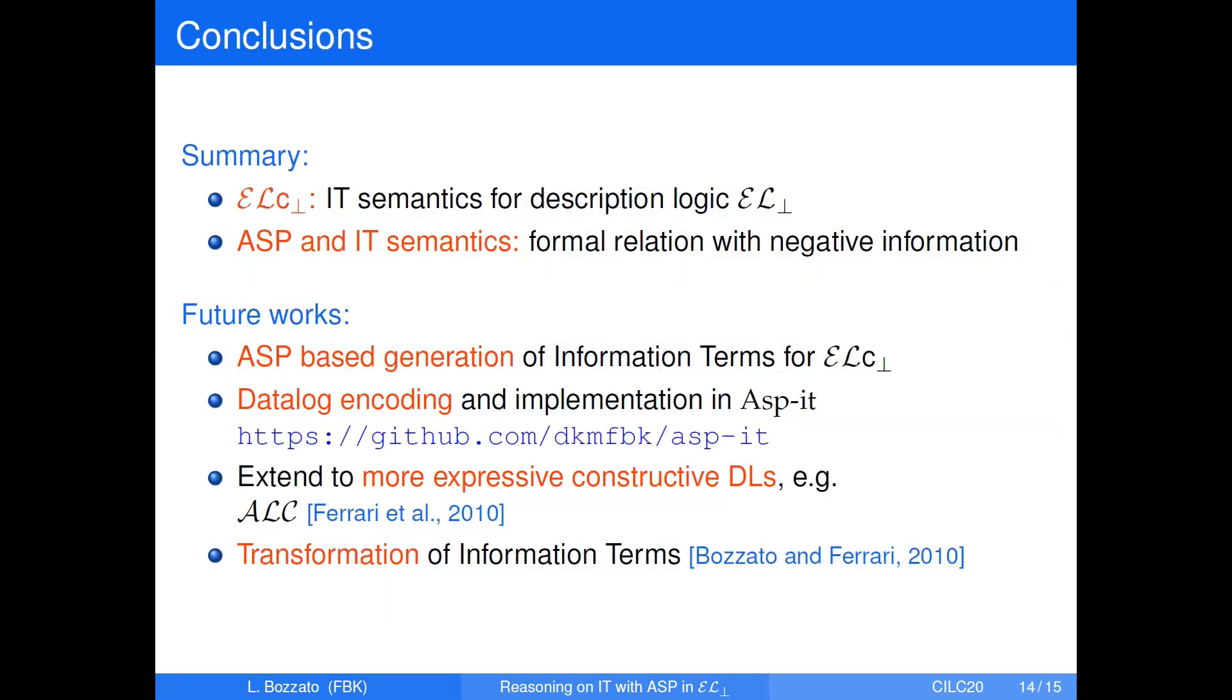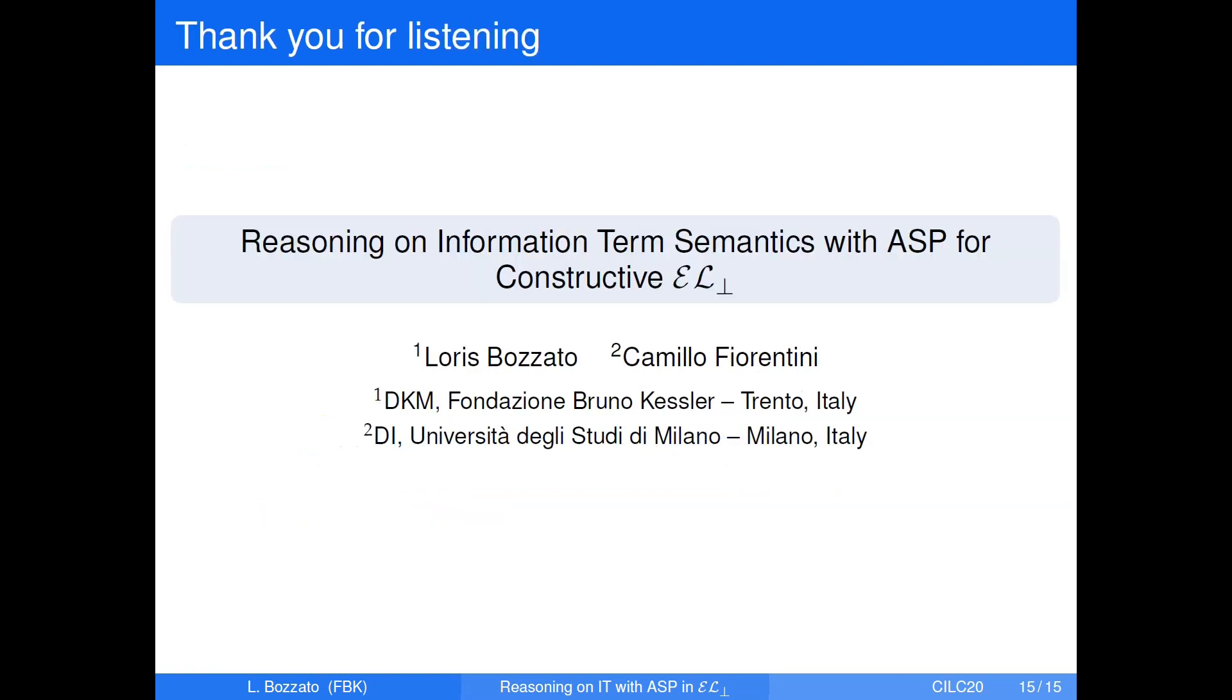We then define an answer set for a piece of information if its positive answers meet the negative constraints. By defining a notion of minimal piece of information, we obtain the other direction of our main result. Given a minimal piece of information, then each set of positive answers is an answer set for the formula K. Finally, we can prove that an interpretation is an answer set for a formula K if and only if it corresponds to an answer set of a minimal piece of information for K. So, to conclude, in this work we presented a constructive semantics for EL bot and we extended our study of relation of these semantics with answer set semantics in presence of negative information. As future direction, we want to use these results for the ASP-based generation of information terms for EL bottom, possibly by extending the datalog encoding and implementation we previously proposed. Our goal is also to extend this study to more expressive description logic and apply these results to other reasoning tasks as the transformation of information terms. So, that's it from my side. Thank you for your attention.